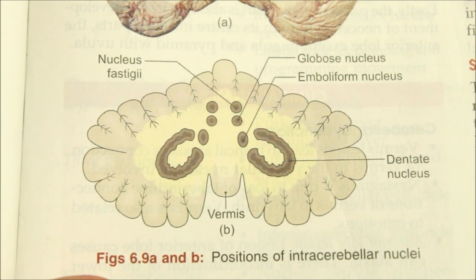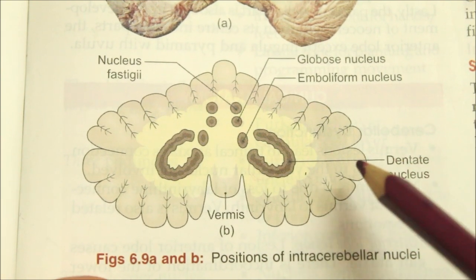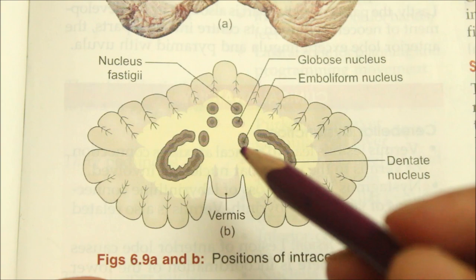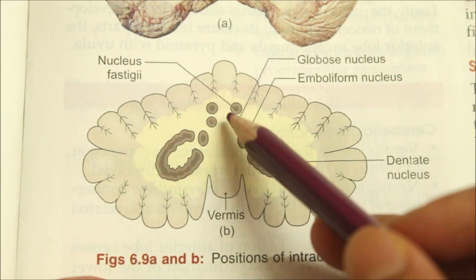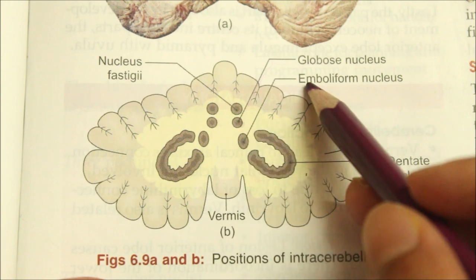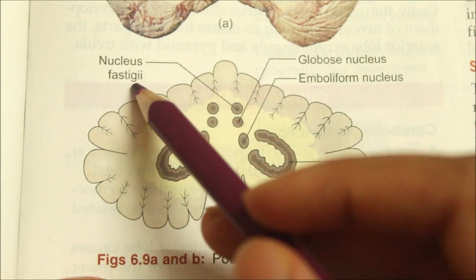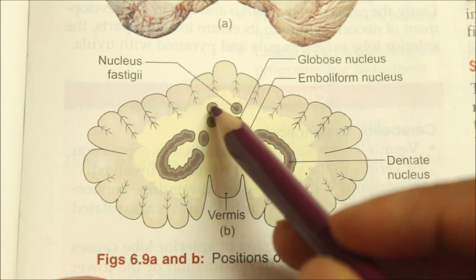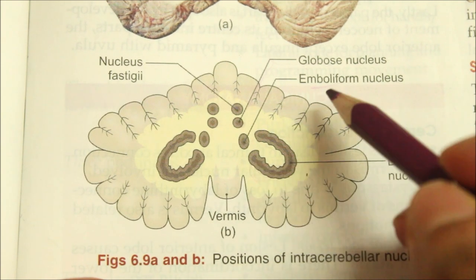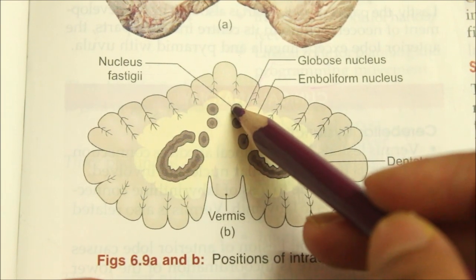Moving on to the gray matter of the cerebellum, there are four pairs of nuclei. First is the nucleus dentatus, also called the dentate nucleus. Second is the nucleus globosus, also called the globose nucleus. Third is the nucleus emboliformis, also called the emboliform nucleus. And fourth is the nucleus fastigii. The dentate nucleus is neocerebellar, the emboliform nucleus is paleocerebellar, and the nucleus fastigii is archicerebellar.